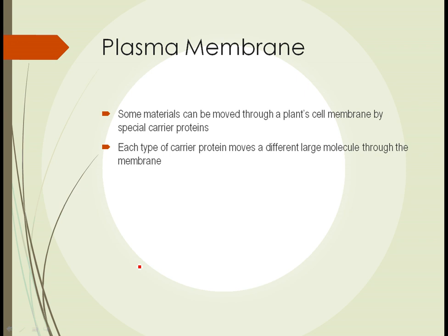There exist in plants carrier proteins. Each of these proteins attracts a specific thing that a plant cell might need. These carrier proteins are allowed to pass through the cell wall, but the materials themselves won't pass through the cell wall until they're being carried by the carrier protein — hence the name.